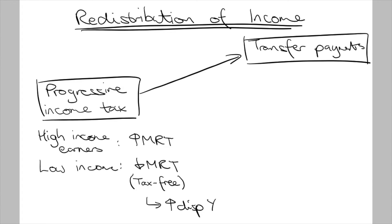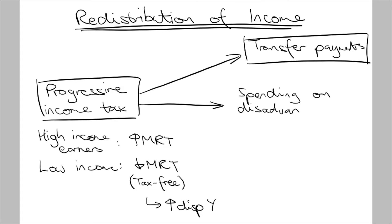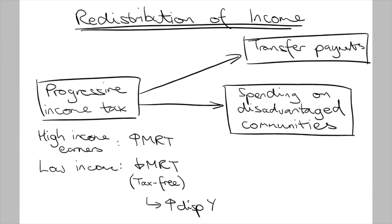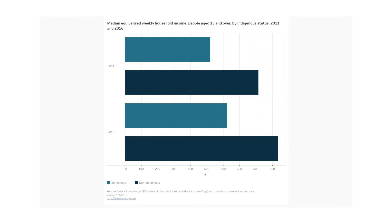One more way that the federal budget can be used to reduce income inequality is through increased spending on disadvantaged communities. For example, Indigenous Australians in remote areas have lower average incomes compared to non-Indigenous Australians. This can be partly attributed to poor education outcomes. So if the government increased expenditure towards improving schooling in remote areas, Indigenous Australians would gain the skills needed to get into higher paying jobs, raising average income levels and lessening the wage gap.